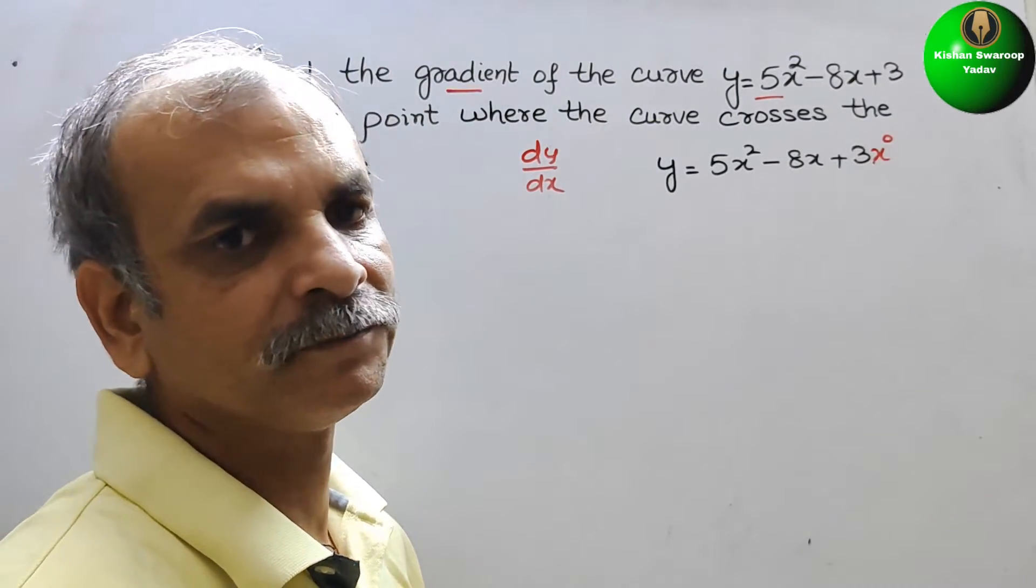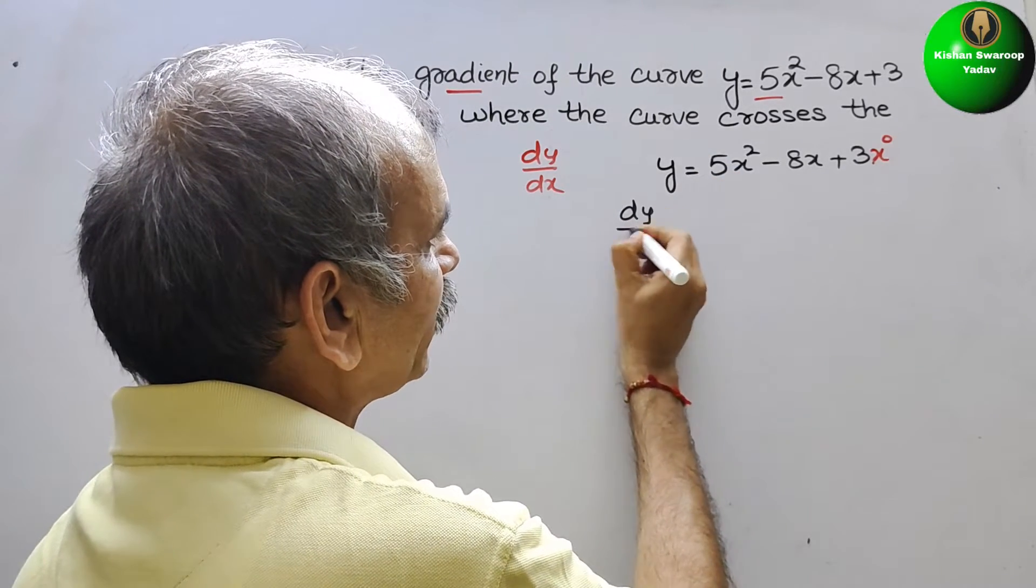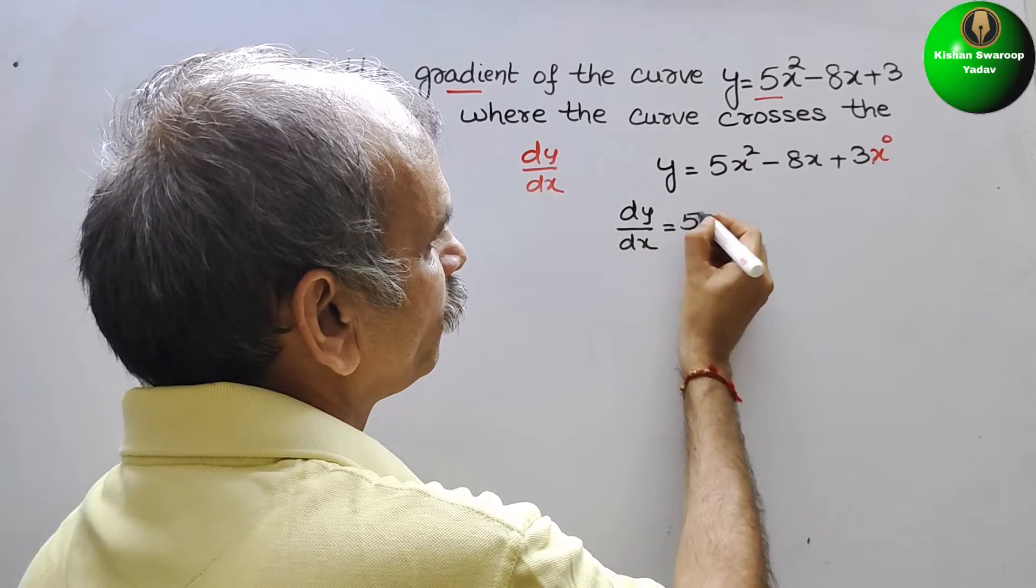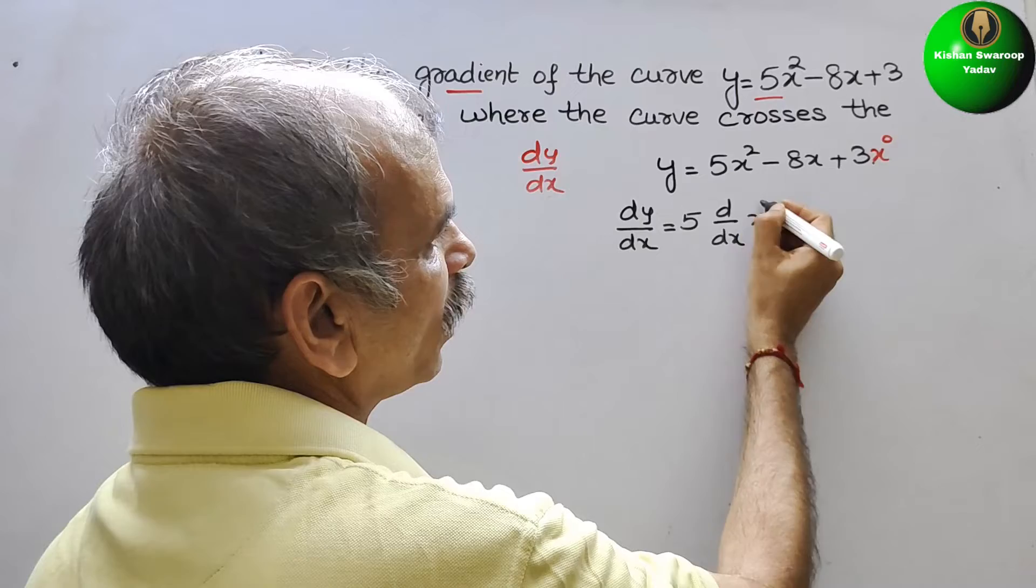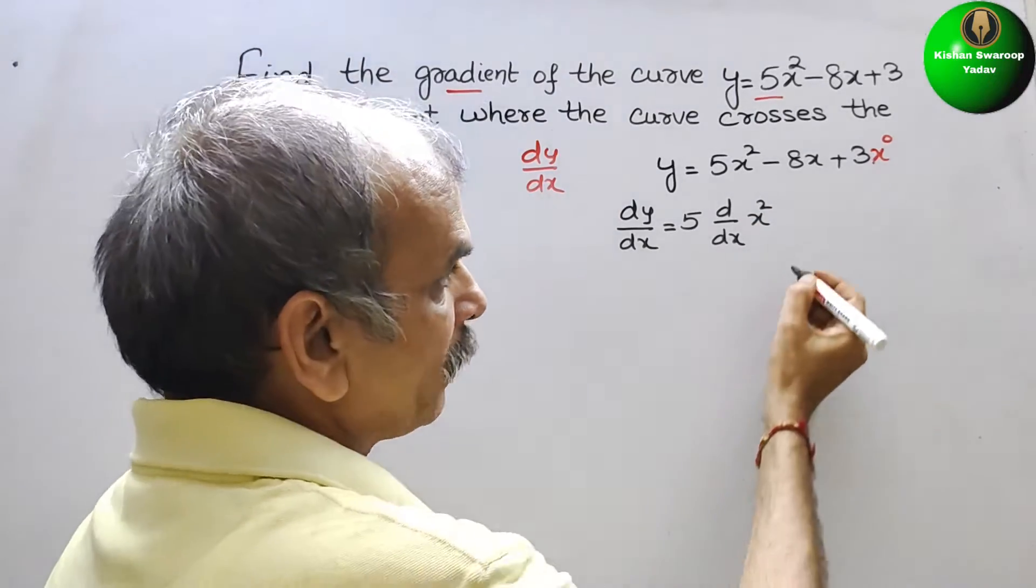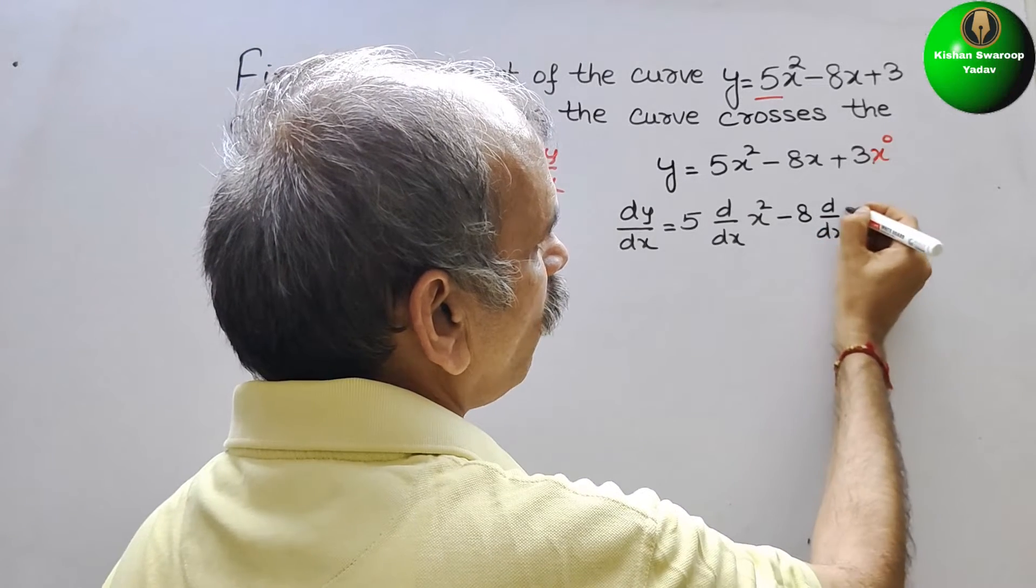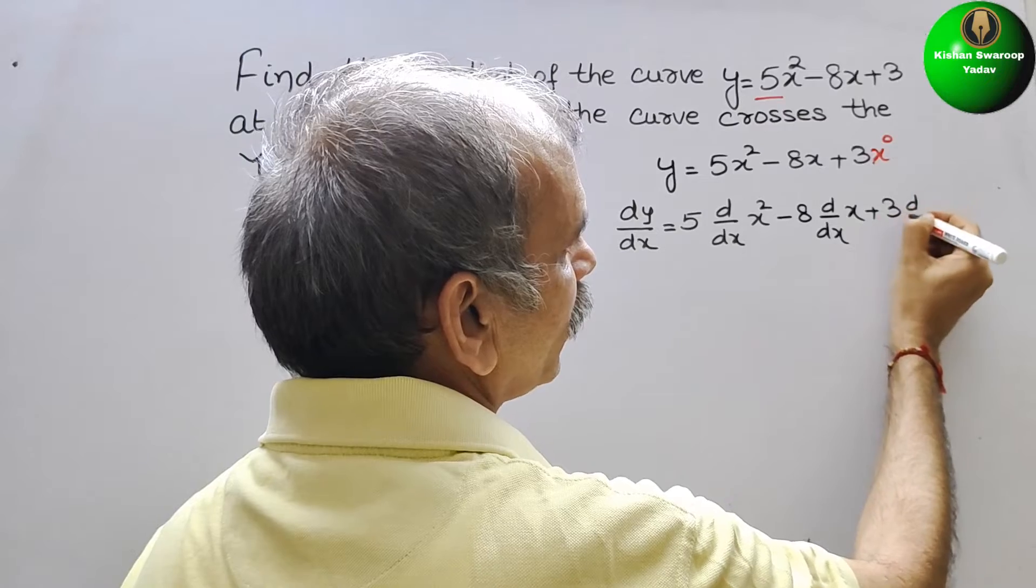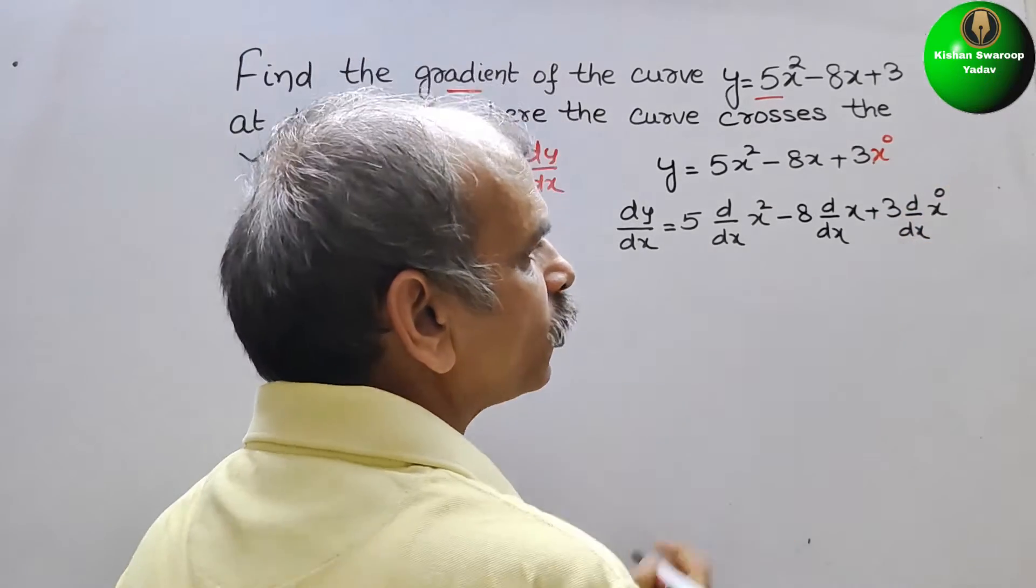Now we will go for differentiation. So it will be dy by dx is equal to 5 d by dx of x square minus 8 d by dx of x plus 3 d by dx of x to the power of 0.